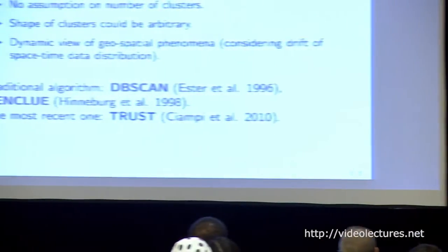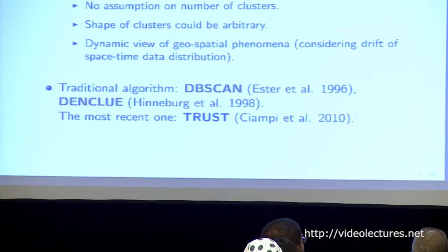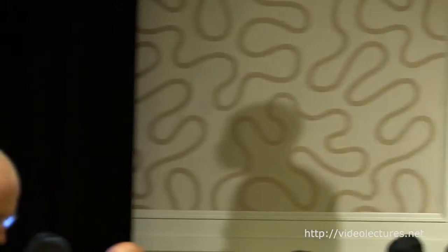Specifically, we focus on a family of dynamic clustering algorithms whose advantages include: there is no assumption on the number of clusters — so it's different from k-means — the shape of a cluster could be arbitrary, and sometimes they take a dynamic view over the geospatial phenomena. The dynamic clustering algorithms include traditional ones like DBSCAN, DINCLUE, or the most recent one, TRUST.